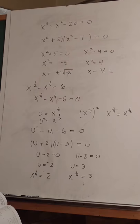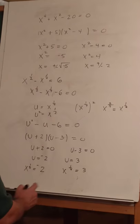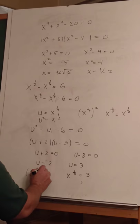Okay, but I don't want x to the one-fourth, I want x. So what do I do to get both of these equal to x? Take it to the fourth power. Right, take both sides to the fourth power.